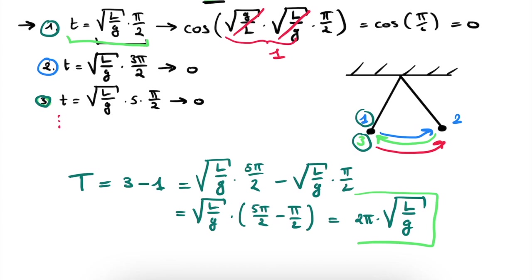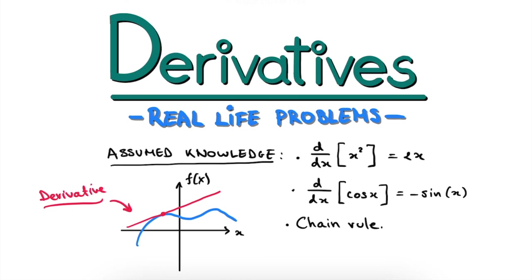This is our final result for the time of one full oscillation. What do we find from this? If the length of the pendulum increases, the time for one oscillation also increases. If g — the gravitational pull toward the Earth — increases, then the time for one oscillation decreases. Therefore, on Jupiter, the same oscillator will oscillate much more quickly, whereas on the Moon, it will oscillate much more slowly.